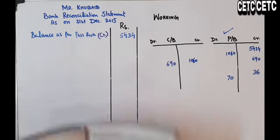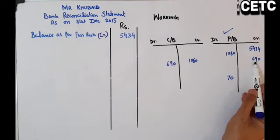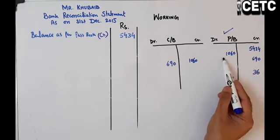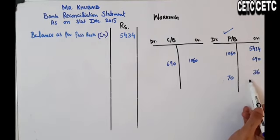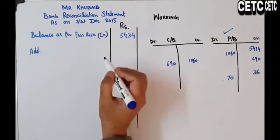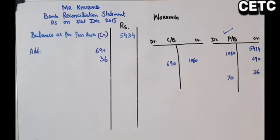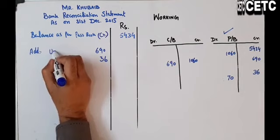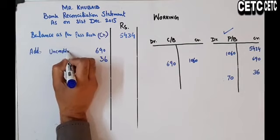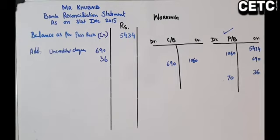اب ہمارا جو balance ہے: 5,434۔ اس میں add ہونے والی چیزیں: 690 (uncredited checks) اور 36 (interest charged by bank)۔ دونوں کو جمع کریں: 726۔ اس کو 5,434 میں جمع کر دیں۔ اب جو چیزیں debit ہو رہی ہیں وہ minus ہوں گی — less: 1,060 (unpresented checks) اور 70 (interest credited on government securities)۔